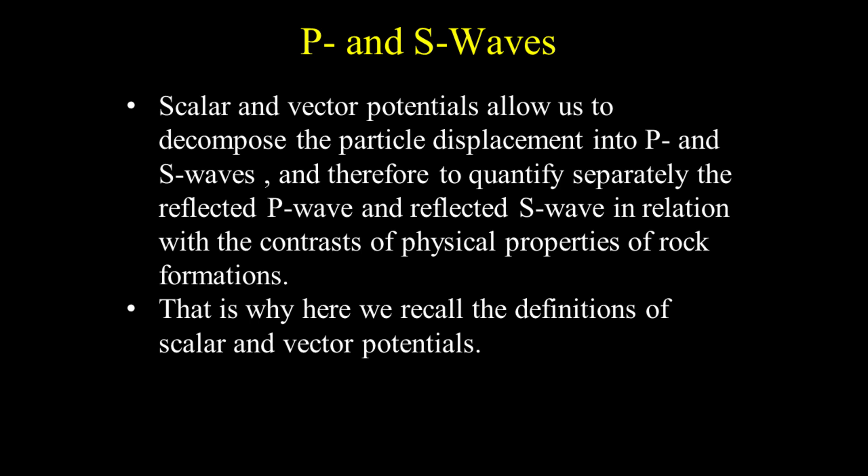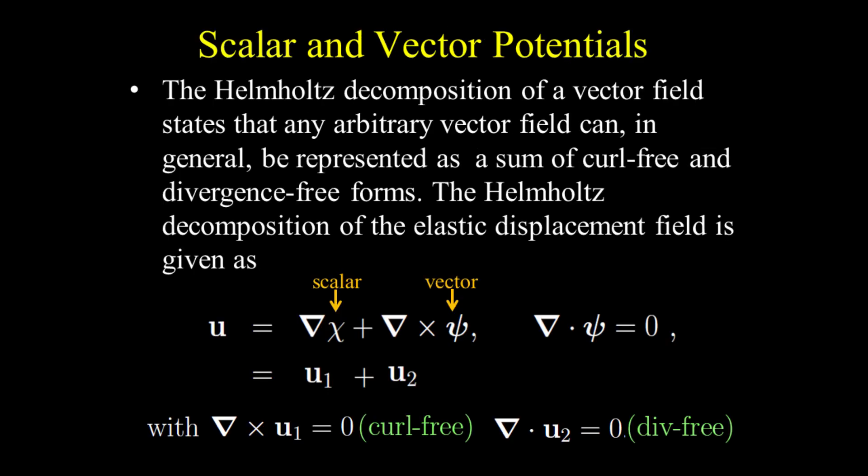As described in a previous lecture, the decomposition of particle displacement into scalar and vector potentials is known as Helmholtz decomposition. It states that any arbitrary vector field can be represented as a sum of curl-free and divergence-free forms. The Helmholtz decomposition of the elastic displacement field is given as the gradient of the scalar potential plus the curl of the vector potential, where Chi is the scalar potential (also known as P wave potential or dilatational displacement potential), and Psi is the vector potential (also known as S wave potential or rotational displacement potential).